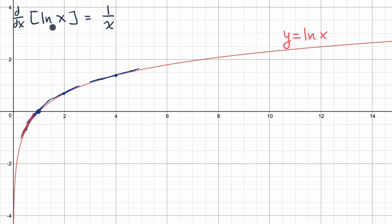So once again, you take the derivative with respect to x of the natural log of x, it is 1 over x. And hopefully, you get a sense that that is actually true here. In a future video, we'll actually prove it.